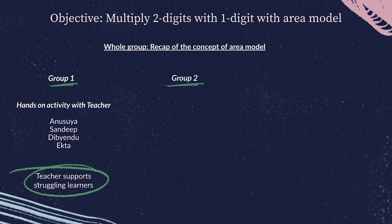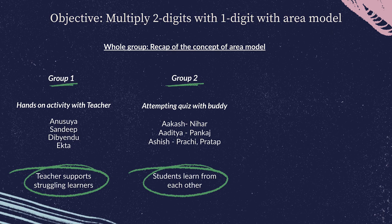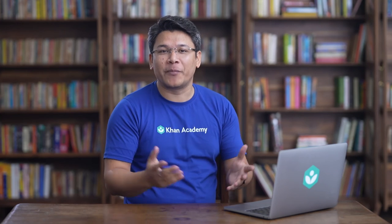In group number two, another group of students who have not attempted the exercises yet but may not need my support — they could be assigned a buddy who has already mastered the concept. In this group, students can learn from each other while the teacher is supporting group number one with the hands-on activity. Students who have already mastered the skill can also be assigned work from the next topic so they can keep moving forward.